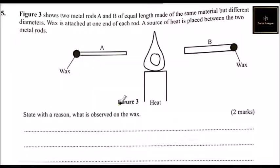Question number 5. Figure 3 shows two metal rods A and B of equal length made of the same material but different diameters. Wax is attached at the end of each rod. A source of heat is placed between the two rods. So we have our diagram.